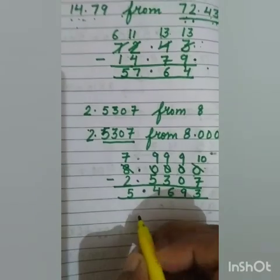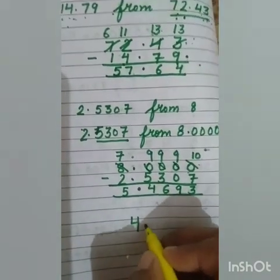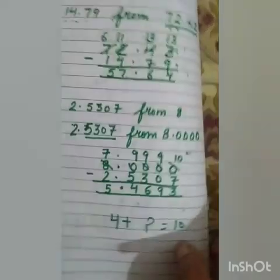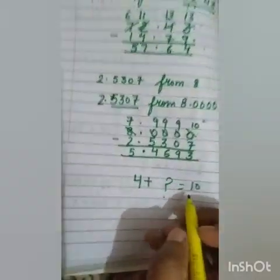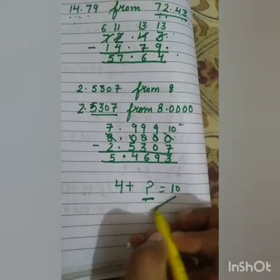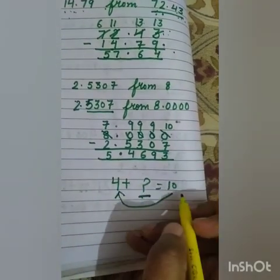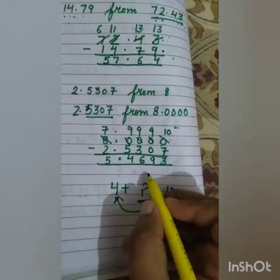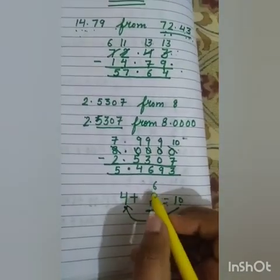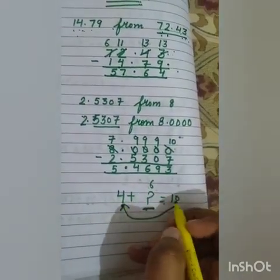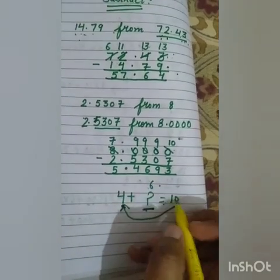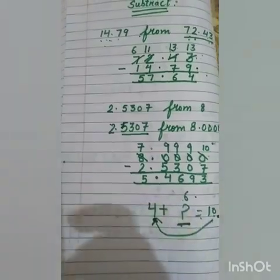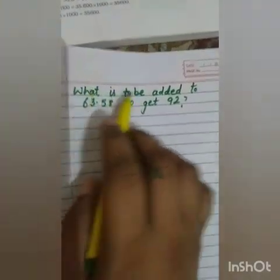Let's take an example to understand this. We have a word problem: if we have 10 and we subtract 4, we get 6. So when we need to find what to add to 4 to get 10, we subtract: 10 minus 4 equals 6. Then 4 plus 6 equals 10. Similarly, we will do this in the question.